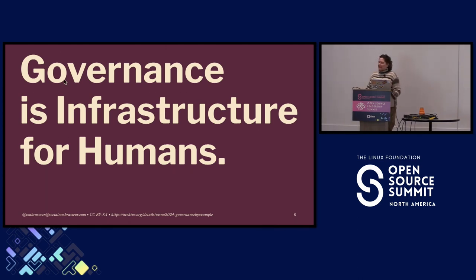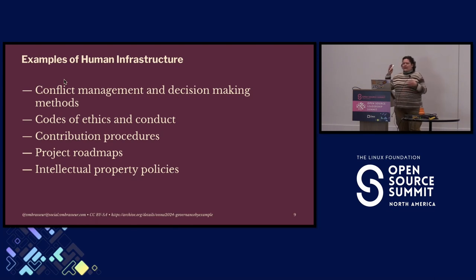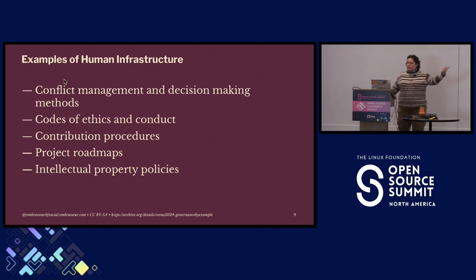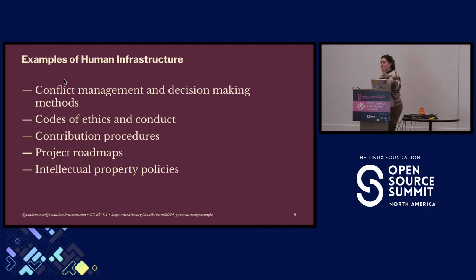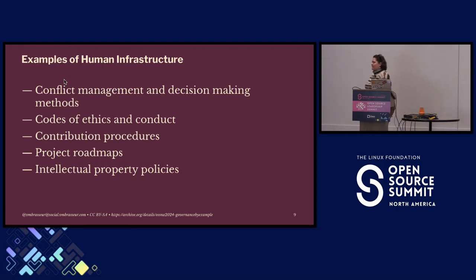It is a broad definition, and that's intentional, because the infrastructure required for any organization or any free and open source software project is going to be different depending upon the constraints and the individuals. Here's a high-level list of some things you might consider as human infrastructure: conflict management, decision making — pretty important stuff. Codes of ethics and conduct — fundamental. Contribution procedures, project roadmaps — something a lot of people don't normally think of as governance, but it does help guide people along the correct path. Intellectual property policies, security policies — how are you handling all those? These are all things for which we should set up expectations. Those expectations are governance — the how and why we do things here.